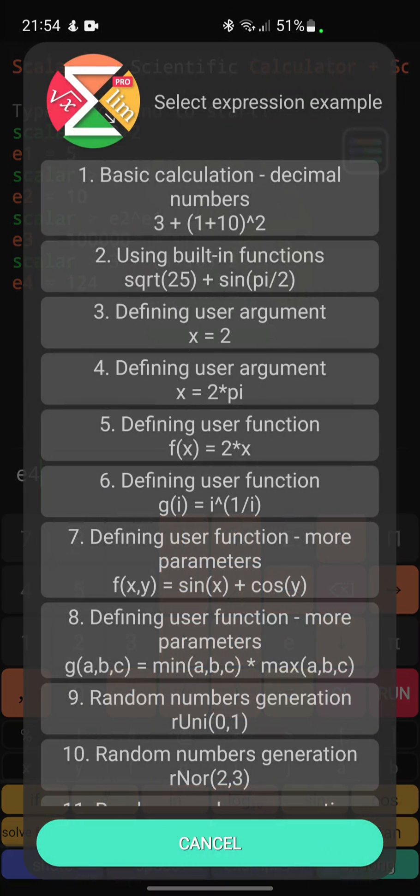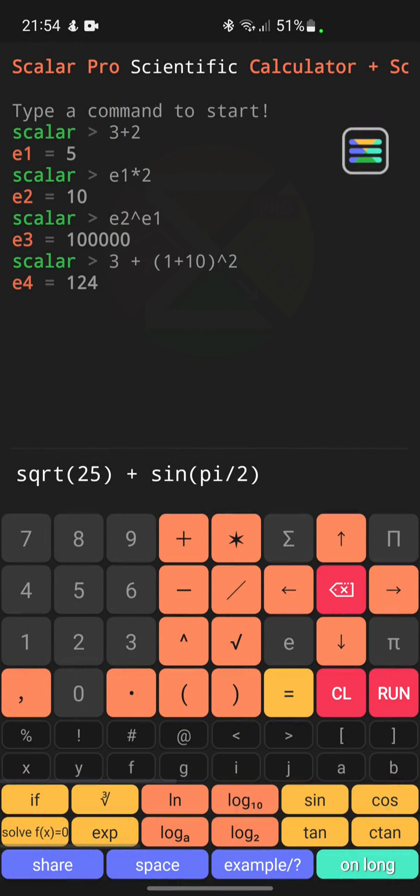Example number 2 presents the use of the basic built-in functions. Clicking run gives expected result of 6.